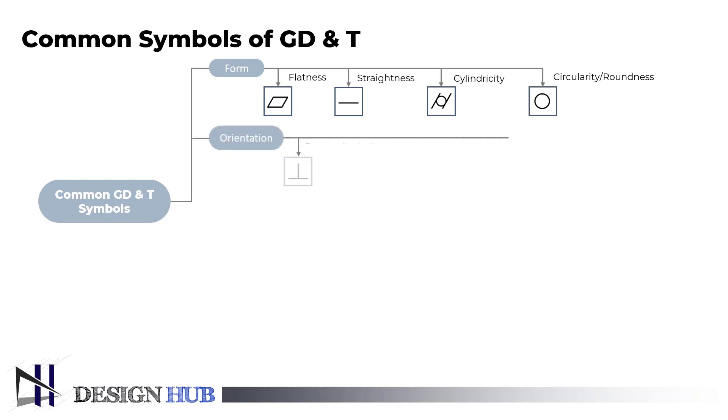In orientation type tolerance we have perpendicularity, parallelism, and angularity. The orientation of the form in relation to a reference is decided by orientation tolerance. It is a geometric tolerance for features related to datums because a datum is always required to indicate orientation tolerance.